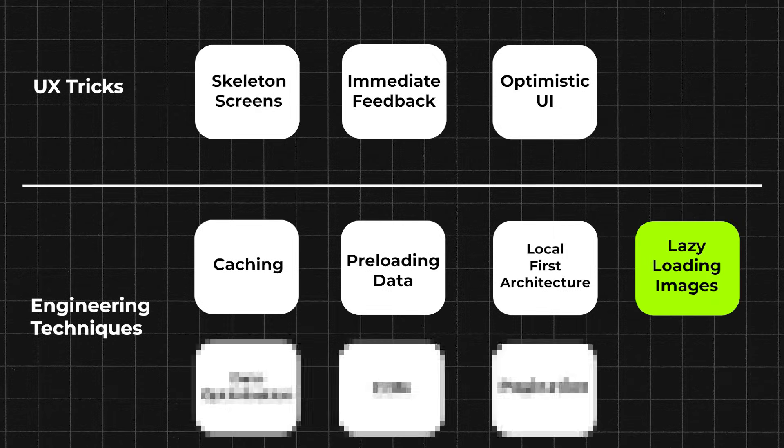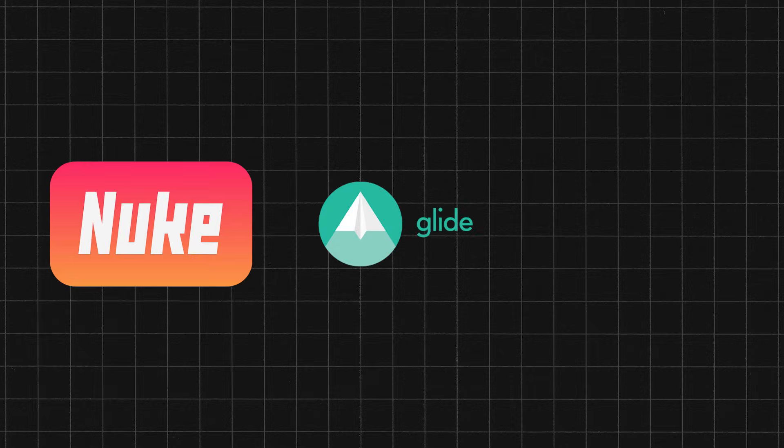Technique number four: lazy loading images. This is a technique where images are only loaded when they are actually needed. Instead of loading all images when the screen loads, we wait and only download them when the user scrolls to that part. This is complex, but luckily there are standard libraries on Android and iOS that do this almost automatically — for example, Nuke, Glide, and Coil. In most cases you can implement them with just two lines of code, so make sure to use them for all your images.